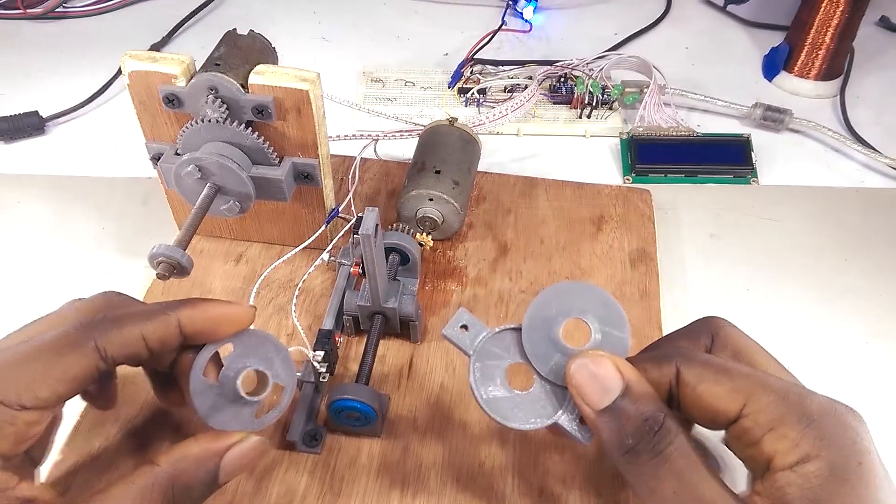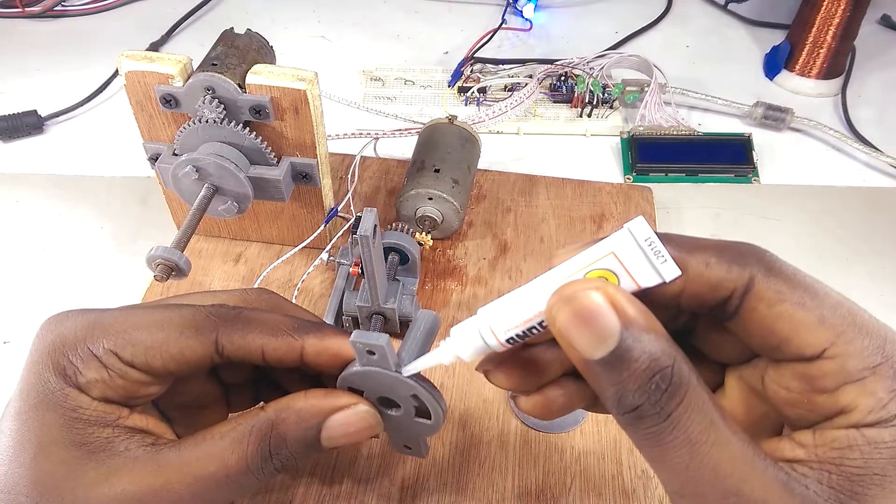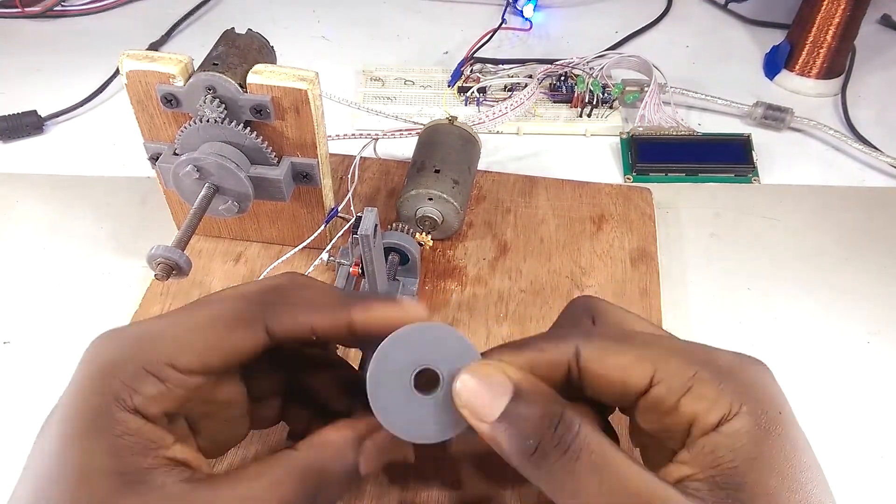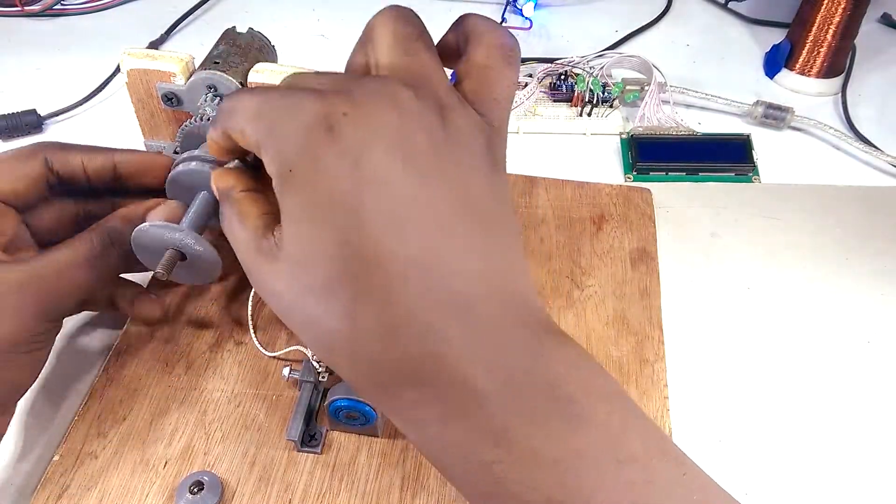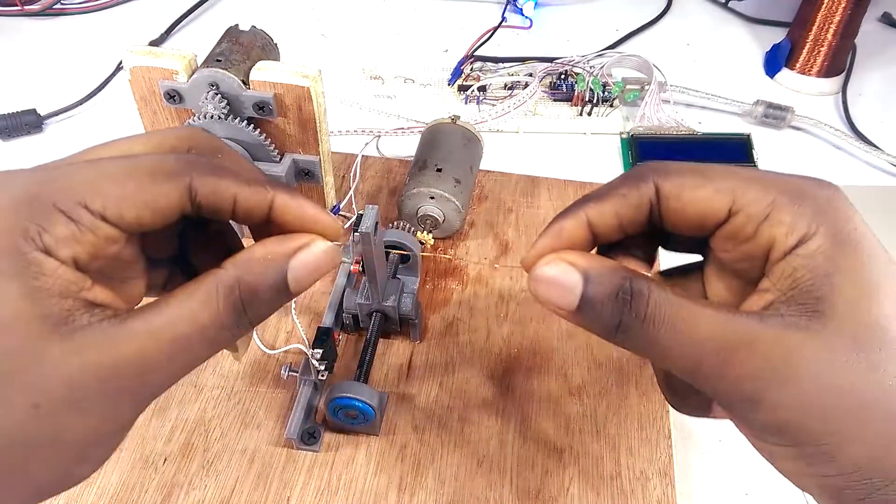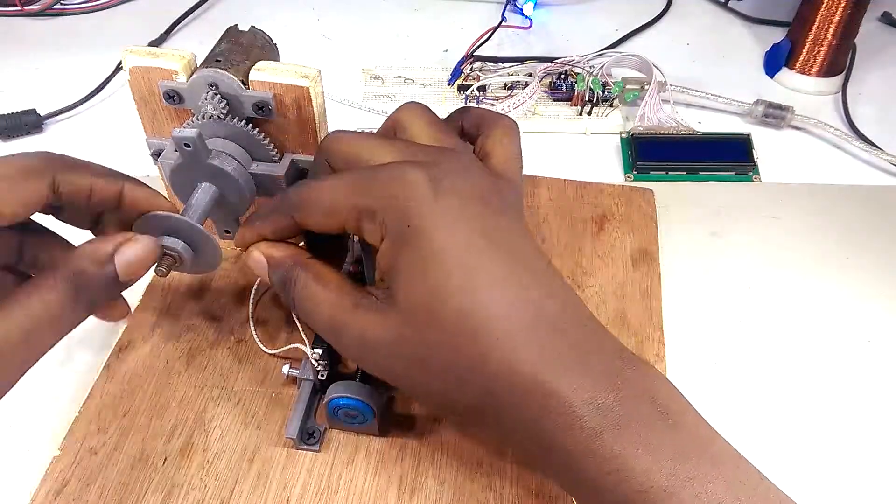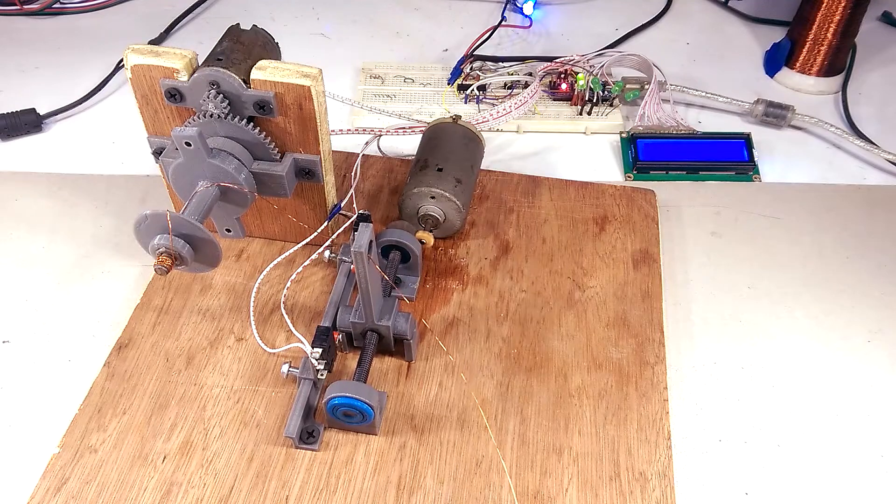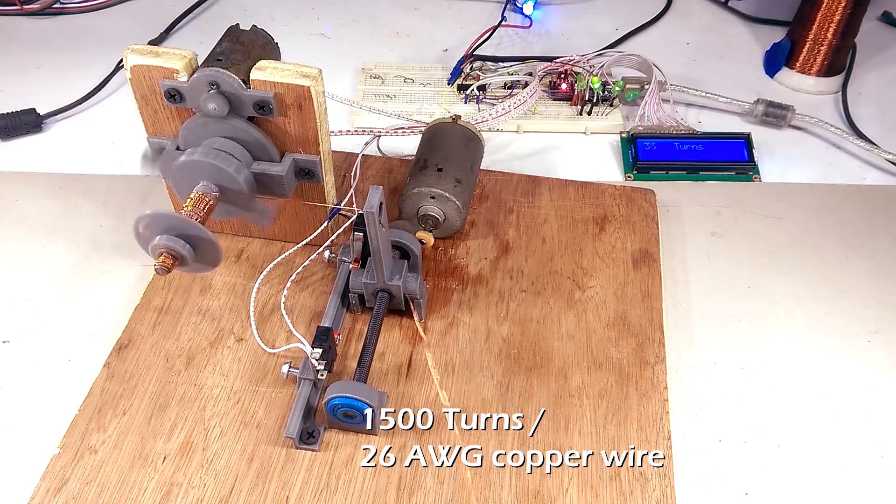So making the coil is just a matter of printing out the body, gluing the necessary pieces together, attaching it to the rig, loading the copper wire, and entering the number of turns I want in the code, which is 1500 turns on the 26 gauge copper wire for this project.